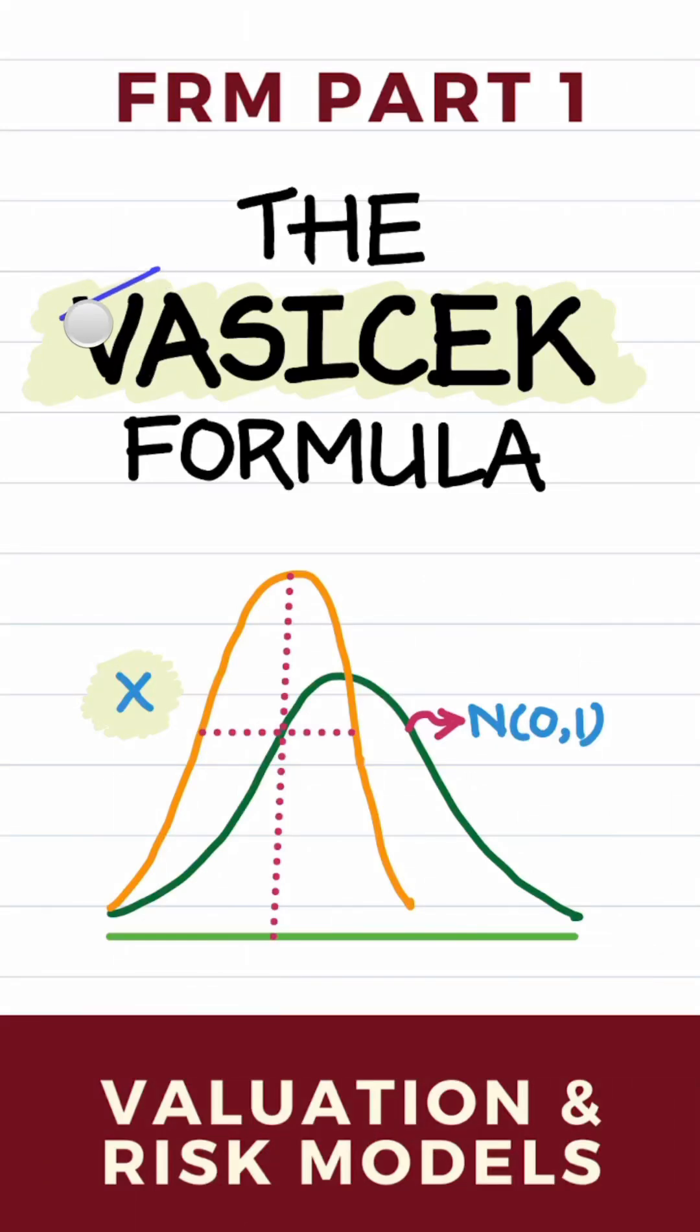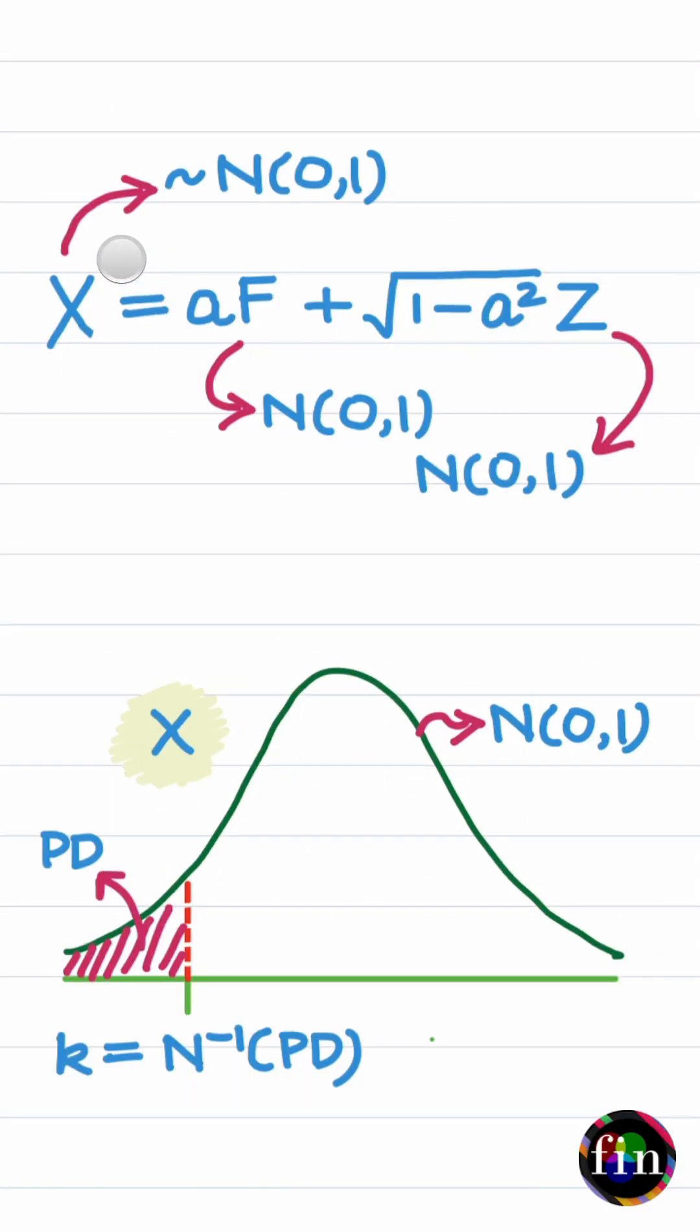To get the logic behind the Vasicek formula, start with the standard normal distributed shock X, which when it takes a value to the left of this threshold value K, results in the default of your company.